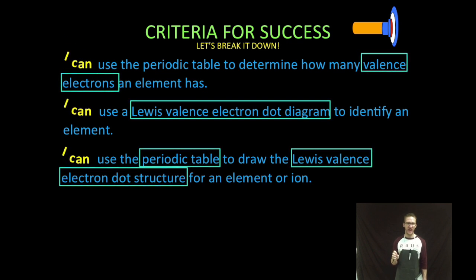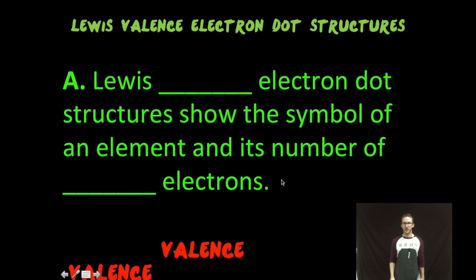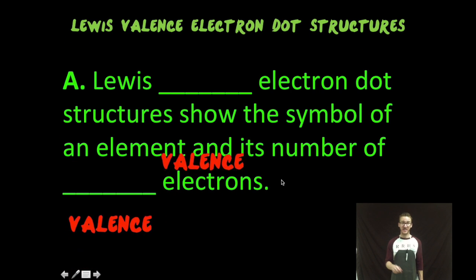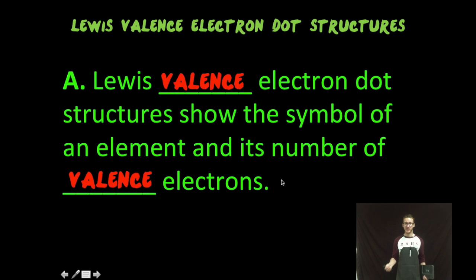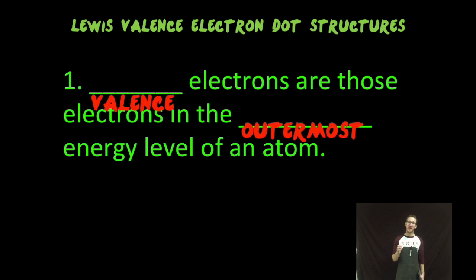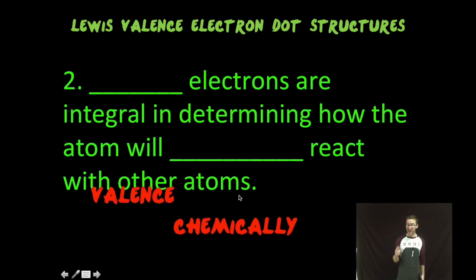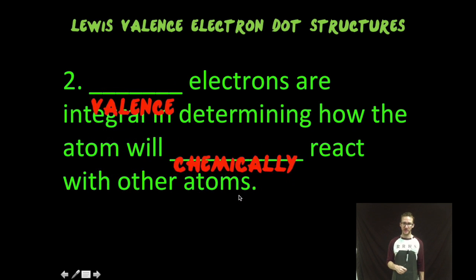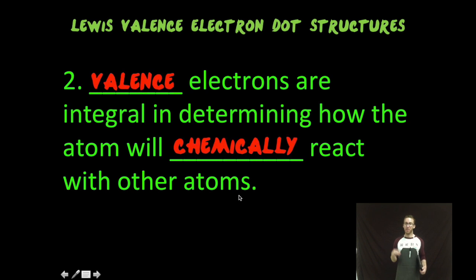A Lewis valence electron dot structure shows us the symbol of an element and its number of valence electrons. Valence electrons are those electrons in the outermost energy level of an atom. We care a lot about the valence electrons. They are integral or important in determining how the atom will chemically react with other atoms. So when we write these Lewis valence electron dot structures, our focus is going to be on just the valence electrons.